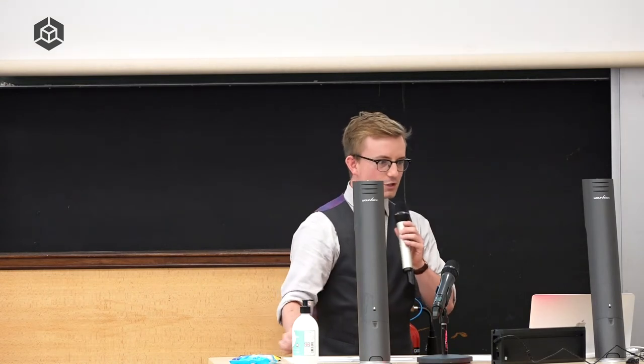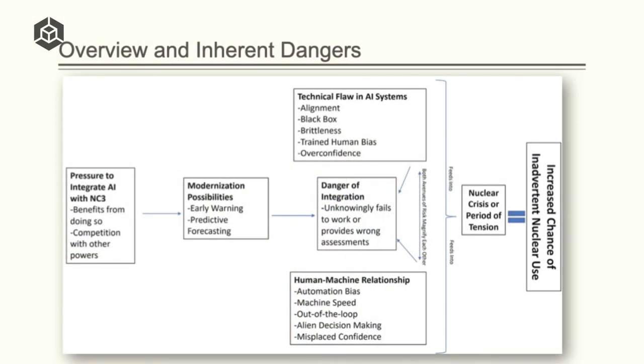So basically I see this problem as coming in the diagram I have above here. One, there is pressure to integrate artificial intelligence or more accurately machine learning and deep learning with nuclear command control communications or NC3. This leads to possible modernization, which has inherent potential risks associated with it coming from two parts. You'll see there's technical flaws in AI systems, and there's a list of them there, things that are inherently problems with our modern versions of AI and at least near term AI.